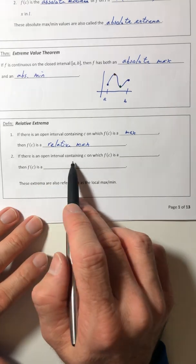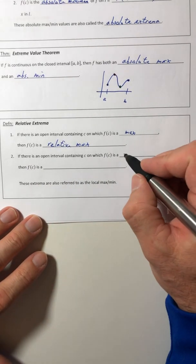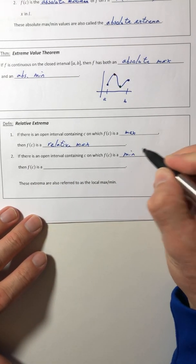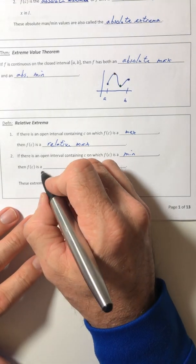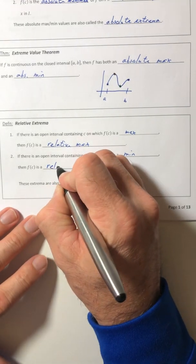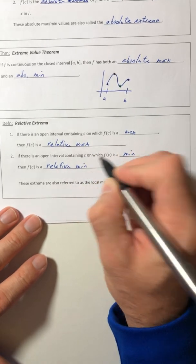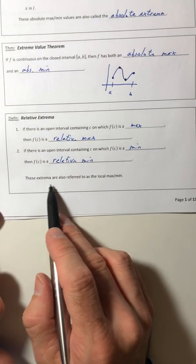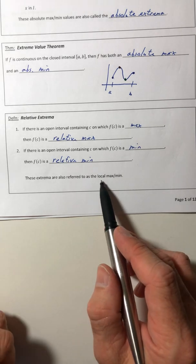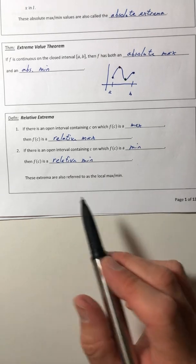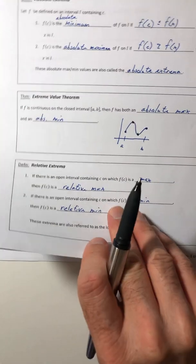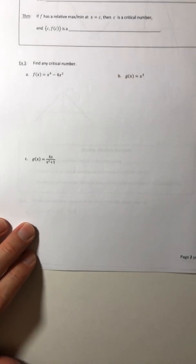So the flip of it, if there's an open interval containing C on which F of C is a min, then F of C is a relative min. So these extrema are also referred to as the local max or the local min.